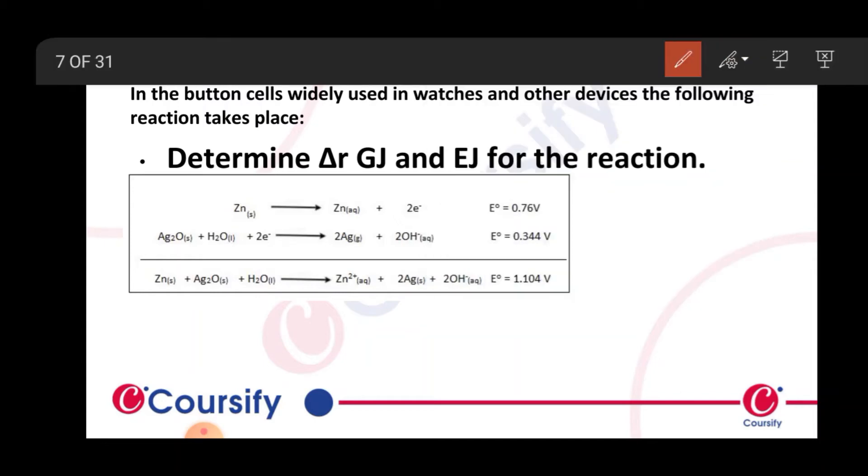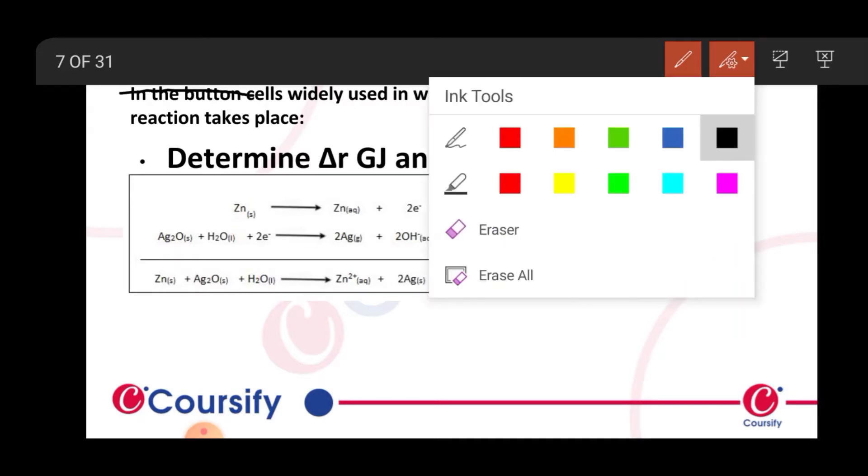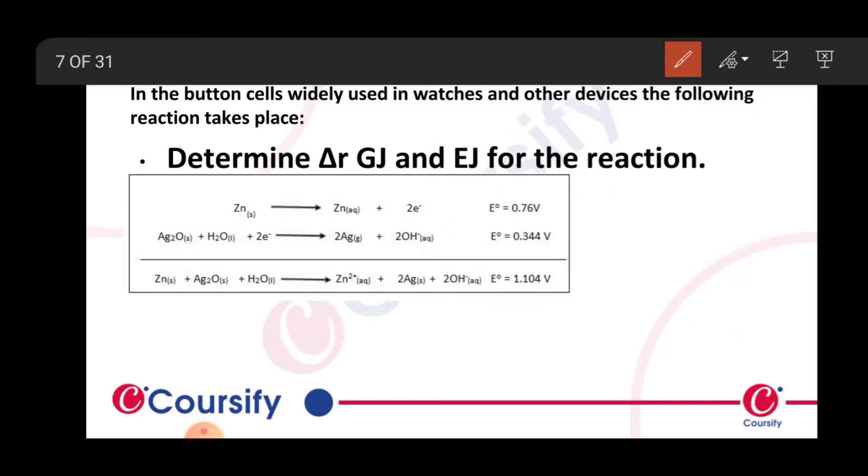Next question. In button cells widely used in watches and other devices, the following reaction takes place: zinc solid to zinc aqueous, oxidation E⁰ is 0.76, Ag₂O to electron to Ag plus OH⁻, E⁰ is 0.34.